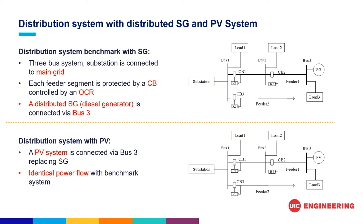To formulate the full scenario, we designed a distribution benchmark with a distributed synchronous generator. This system is connected to the main grid, and each feeder segment is protected by a circuit breaker controlled by an overcurrent relay. A distributed synchronous generator is connected through bus 3 — this synchronous generator is a diesel generator. To study the impact of PV generation on this protection system, the synchronous generator is replaced with a PV system. This new system shares the identical power flow with the benchmark system.